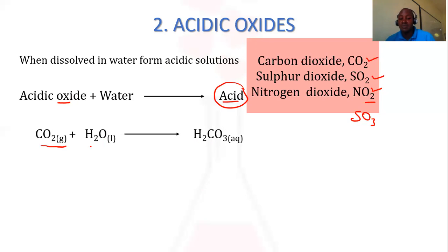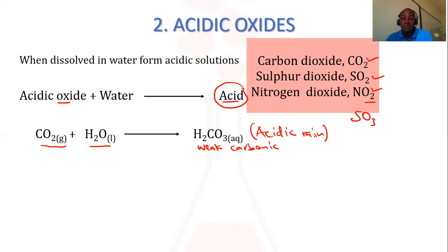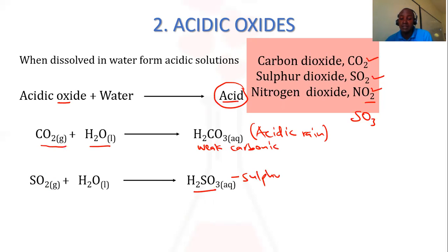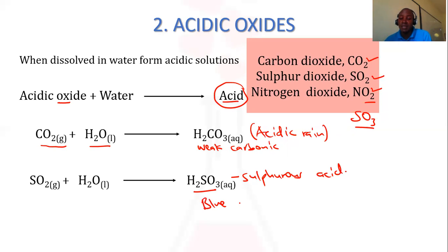For example, carbon dioxide gas tends to dissolve in water to form a weak acid known as carbonic acid. This is common with acid rain when carbon dioxide dissolves in water. Sulfur dioxide will also produce an acid known as sulfurous acid when dissolved in water, while sulfur trioxide will produce sulfuric acid. So these acidic oxides — dissolve them in water and you have a solution that will always turn blue litmus paper to red, just like acids do.